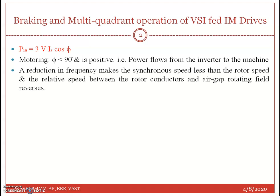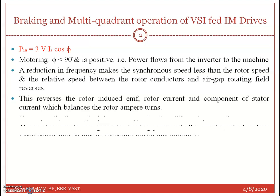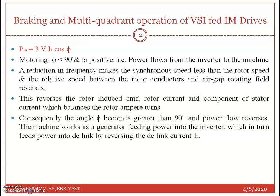For a reduction in frequency, the synchronous speed becomes less than the rotor speed and the relative speed between the rotor conductors and the air gap rotating field reverses. This reverses the rotor induced EMF, and the rotor current and the stator current component that balances the rotor ampere-turns also reverses. Consequently the angle φ becomes greater than 90 degrees, power flow reverses, and the machine starts working as a generator, feeding power into the inverter, which feeds power into the DC link by reversing the DC link current ID.